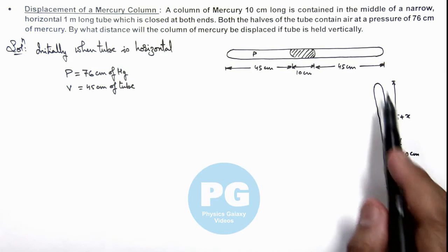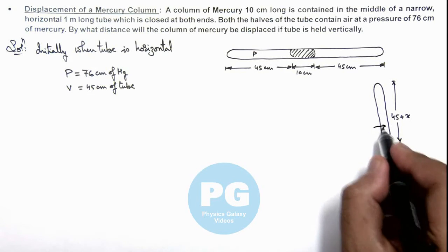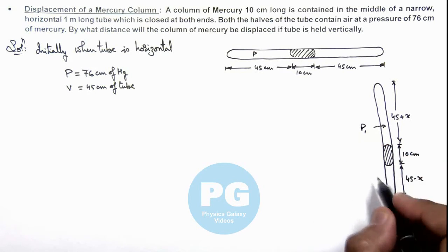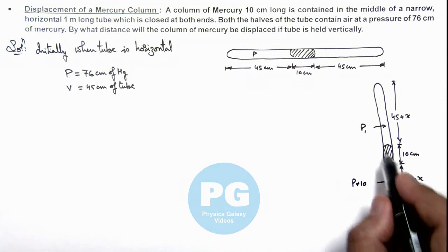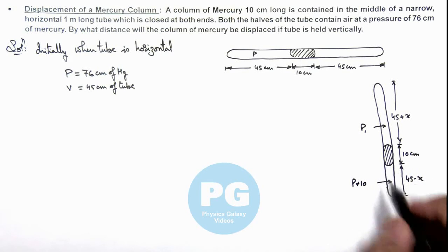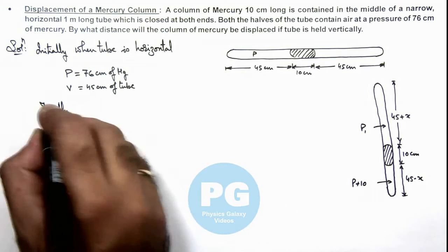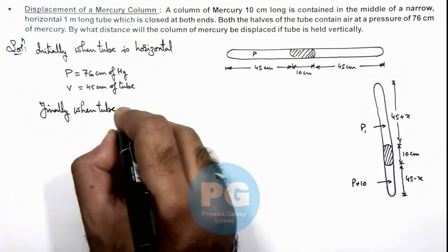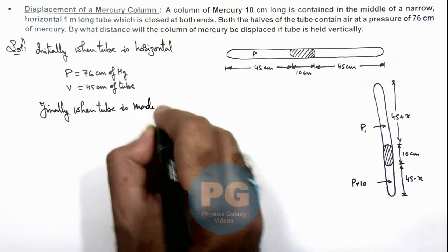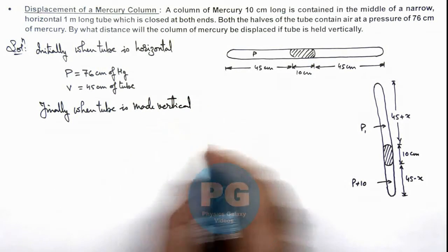Now if it is made vertical, here you can see the pressure of the upper part is p1, the pressure in the lower part will be p plus 10 centimeter of mercury because this 10 centimeter is the mercury column. Now in this situation here we can write finally when tube is made vertical, in this situation we can write.